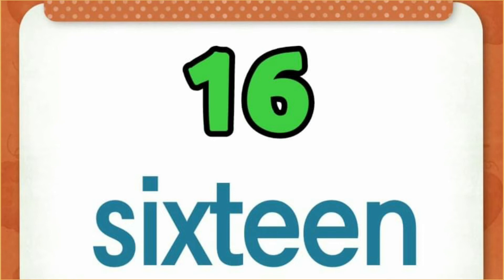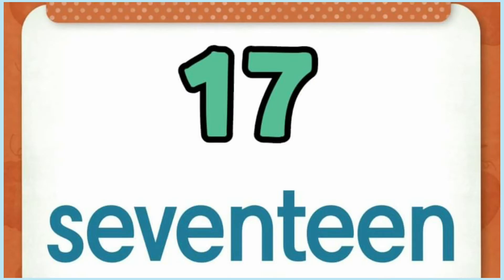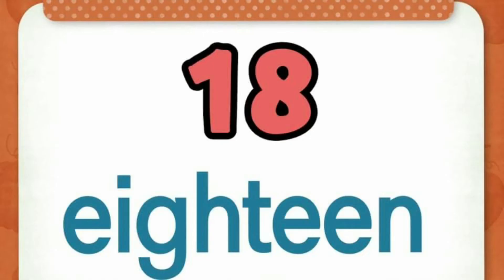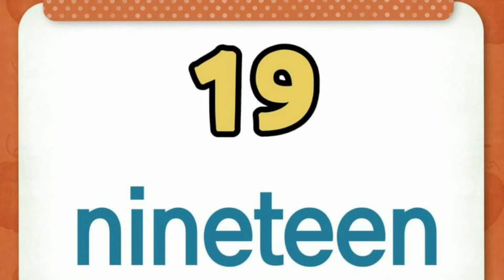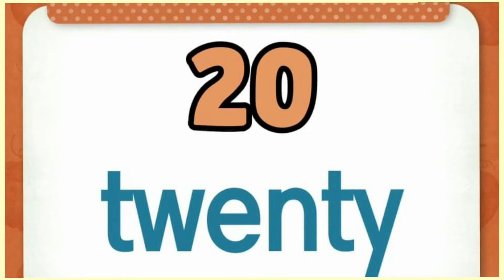16, s-i-x-t-e-e-n, 16. 17. Students, let's spell 17. S-e-v-e-n-t-e-e-n, 17. 18. Let's spell 18. E-i-g-h-t-e-e-n, 18. Next to number 18 is number 19. N-i-n-e-t-e-e-n, 19. Next to number 19 is number 20. Let's spell 20. T-w-e-n-t-y, 20.